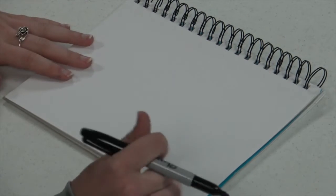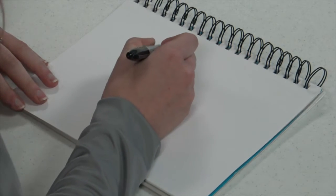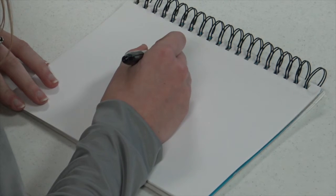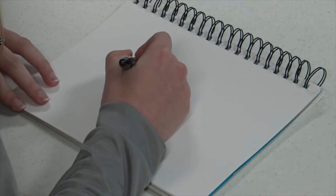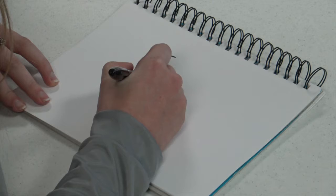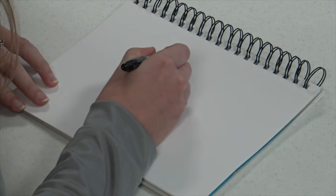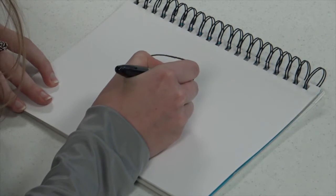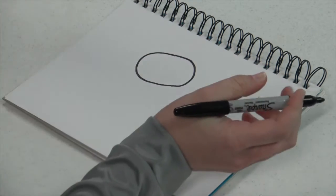For step one we're gonna draw the otter's head by making a large oval in the center of the page. So take your time because this is an otter's head.